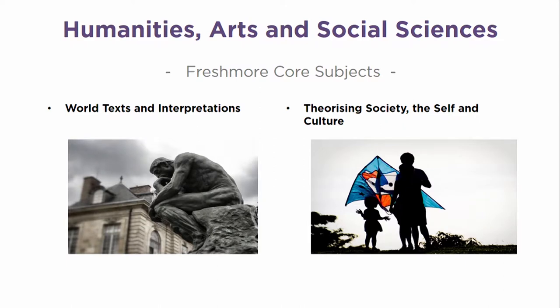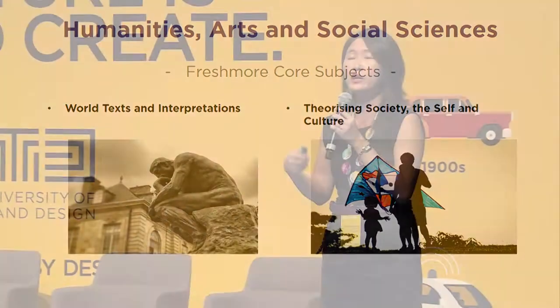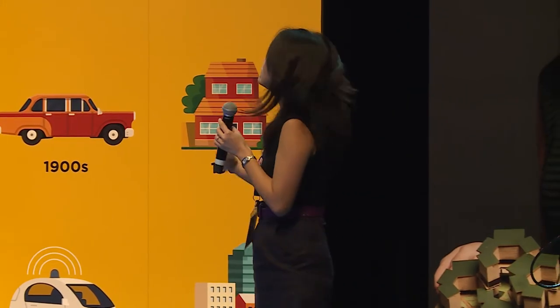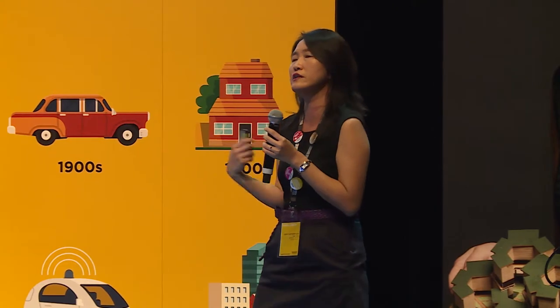The second core is the 'Theorizing Society, the Self and Culture' elective mandatory course. This mandatory course focuses on the social sciences — we introduce students to fundamentals in sociology, economics, psychology, anthropology, and so on — giving you a sense of how our society is structured and organized.